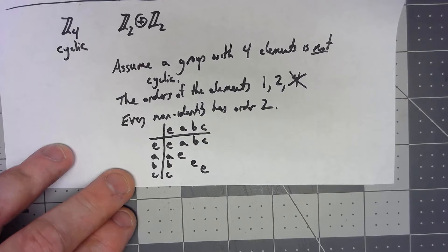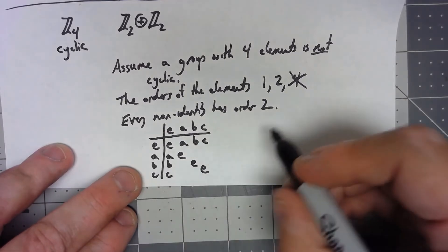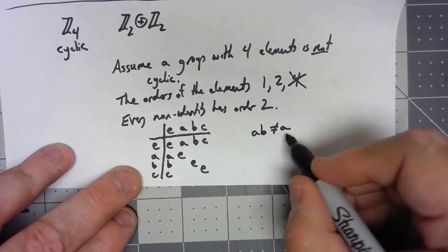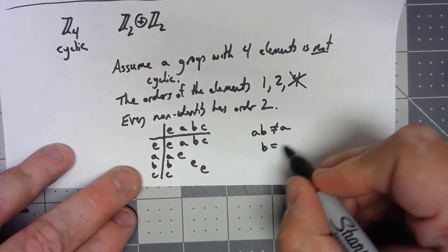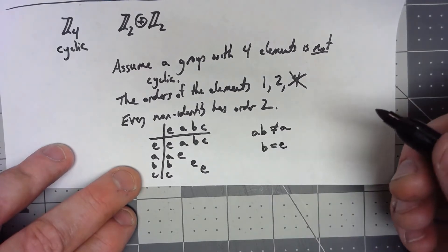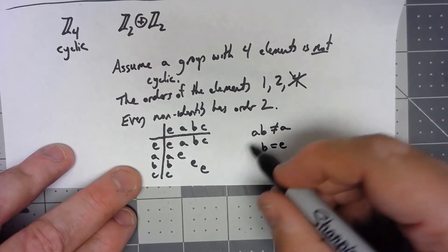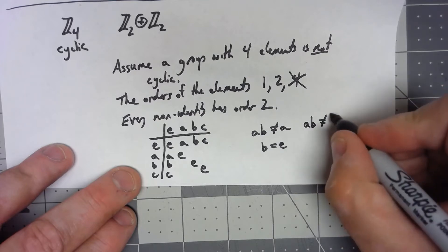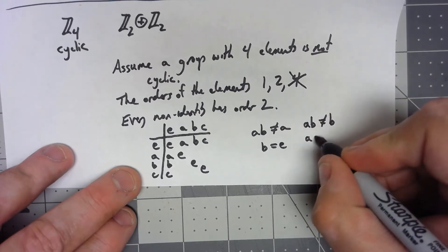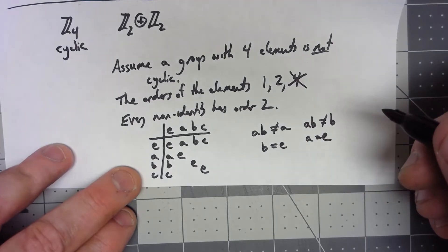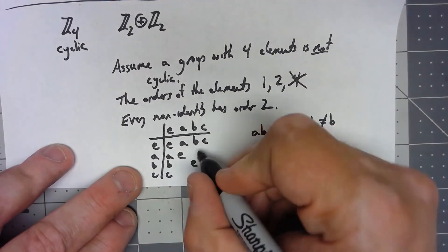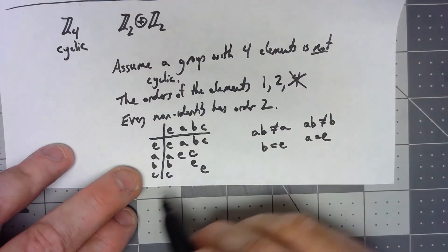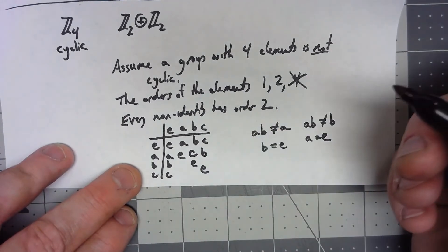Now we get to a little bit tricky stuff. A times B can't be A because then cancellation would give us that B would be equal to the identity. That can't happen. So A times B can't be A. Similarly, A times B can't be B because then right cancellation would give me that A is the identity, and we know that's not the identity. So the only possibility for A times B is that A times B has to be equal to C. A times C has to be B. And doing that kind of reasoning, we can fill out the rest of the Cayley table.